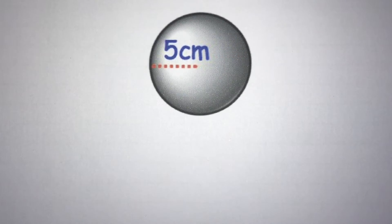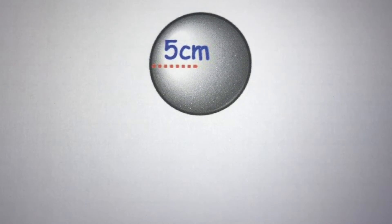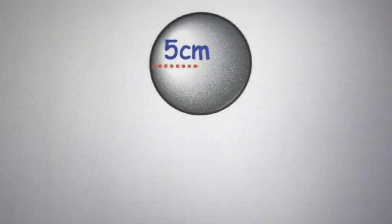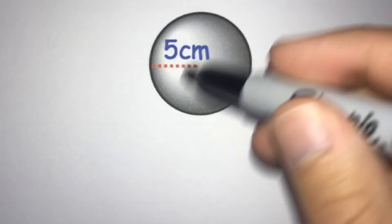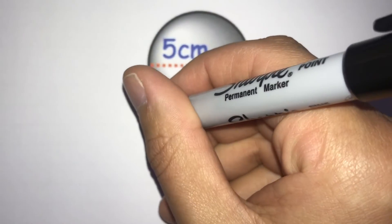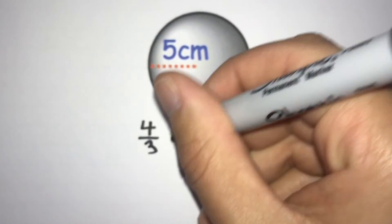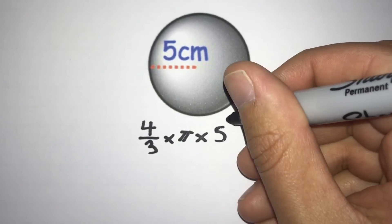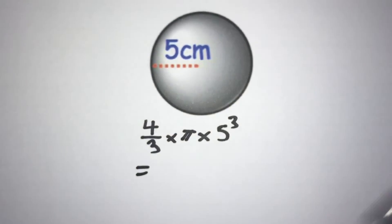Now there are a couple of examples for you to try. In the first one we have a measurement of 5 centimetres on this sphere — pause the video to see if you can work out the volume. Going through it: this time the measurement is from the centre to the edge, so we do have the radius. We just plug 5 into the formula: (4/3) × π × 5³.